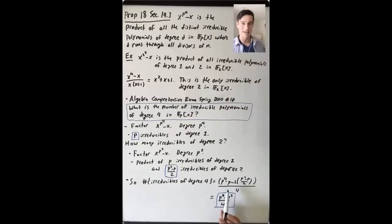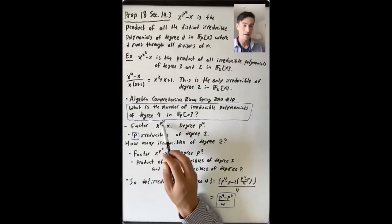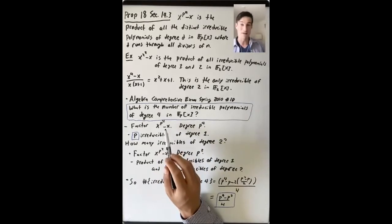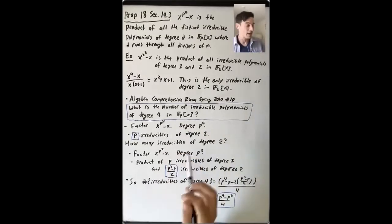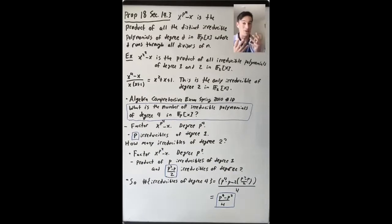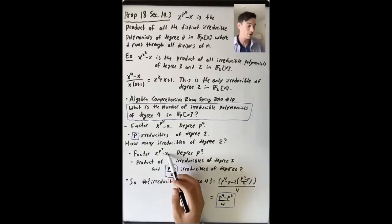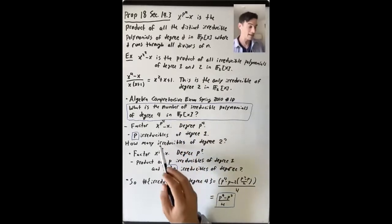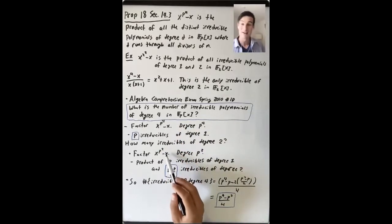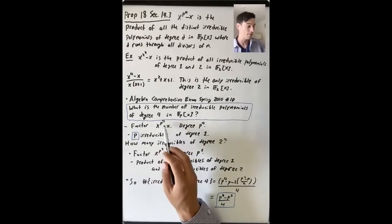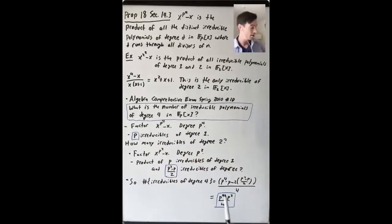There's a cleaner way to see this. Instead of counting the degree-1 and degree-2 things separately, we know that the product of all irreducibles of degree 1 and all irreducibles of degree 2 is exactly x to the p squared minus x. So x to the p to the 4th minus x equals x to the p squared minus x, times the product of all irreducibles of degree 4. Since those two polynomials have degrees p^4 and p² respectively, the number of irreducibles of degree 4 is (p^4 minus p²) divided by 4.